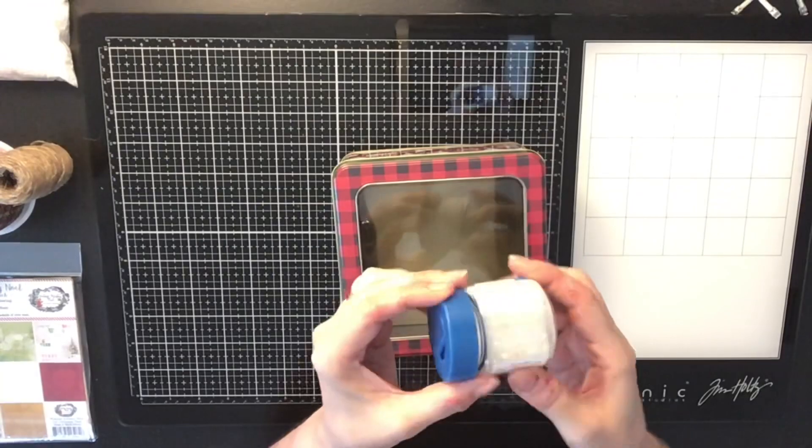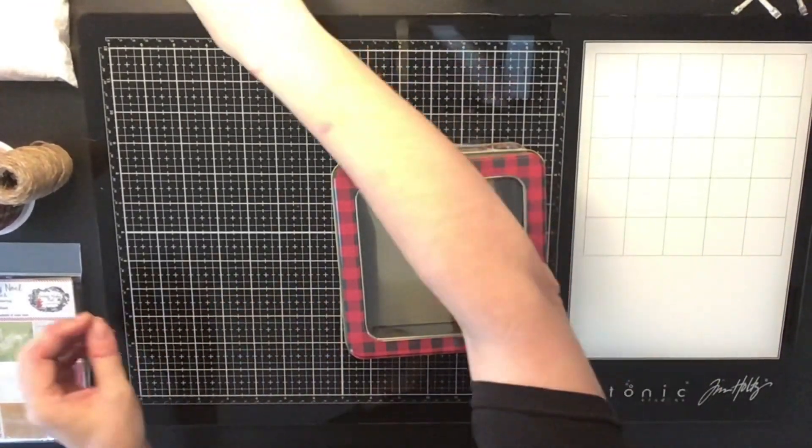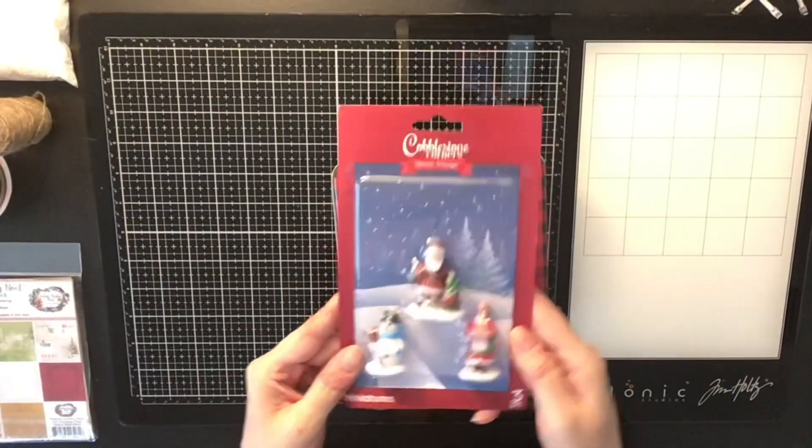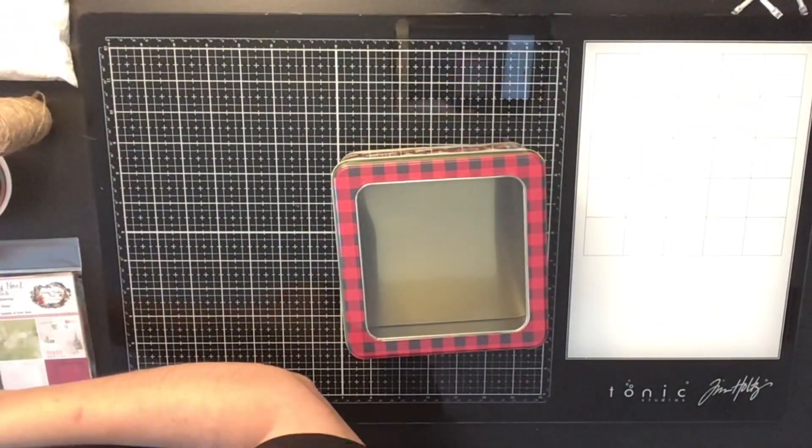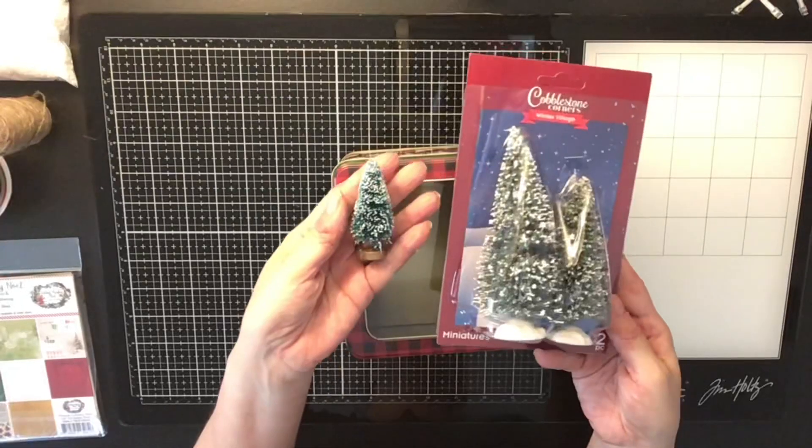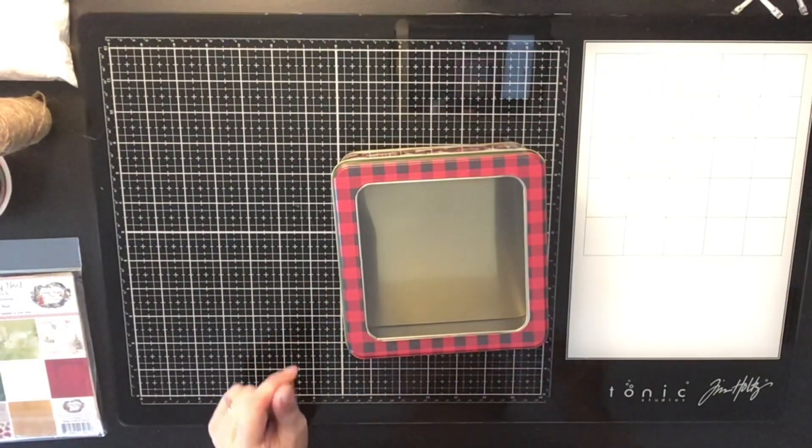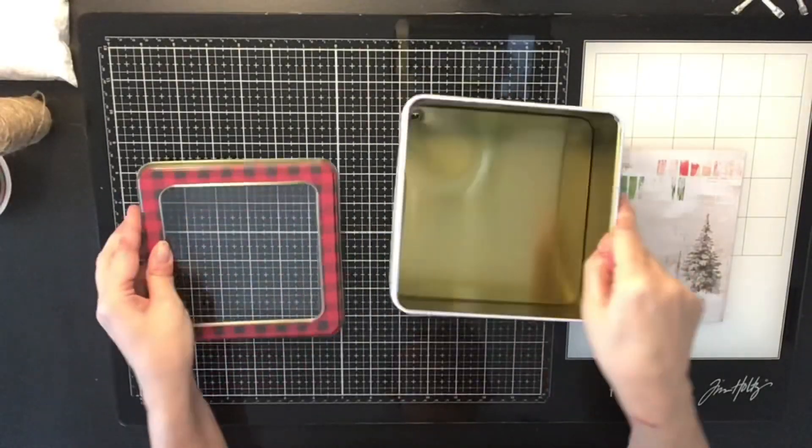So all this stuff that I'm showing you right here I got from the Dollar Tree. The tin is from the Dollar Tree as well. It is a tin that I had that I found that has a little window on it. So it's going to be super cool when I get done with it. So you ready? Here we go.